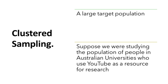The last type of sampling I'm going to touch on today is called cluster sampling, and this method is really good when you have a large population that you're trying to explore. For example, suppose we were looking at a population of people in Australian universities who use YouTube as a resource for research.